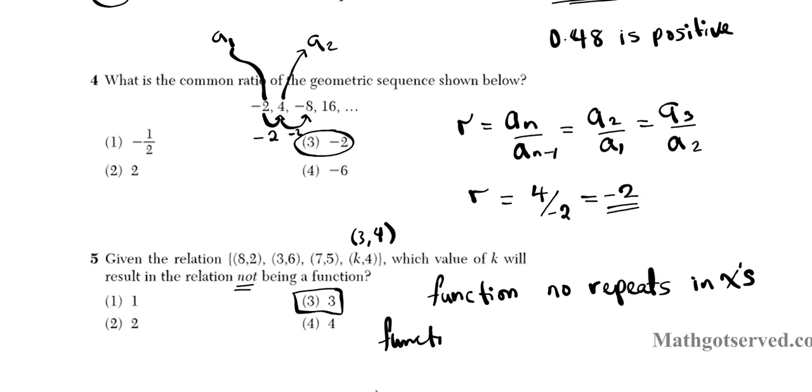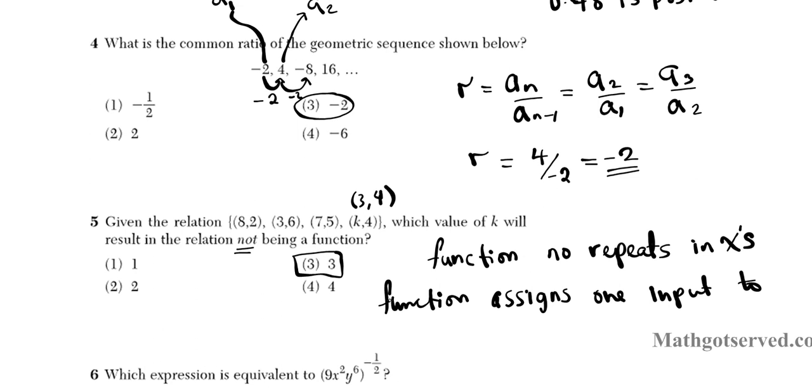A function assigns one input to exactly one output. You can have multiple inputs going to one output, but you cannot have one input going to multiple outputs. So an easy way to look for it is repetitions in the x coordinate. If you have any repetition in the x coordinate and distinct y's in those repetition pairs, then you do not have a function. So you can clearly see that the answer is option number 3.